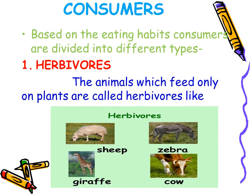Consumers are divided into five types based on their eating habits. The first is herbivores. The animals which feed only on plants are called herbivores. These animals do not eat anything else except plants. Examples are sheep, zebra, giraffe and cow.